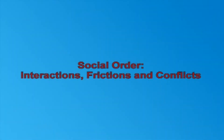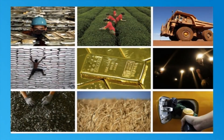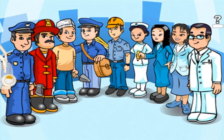The nature of these components of a society may vary from one society to another, and also within the same society from one time to another. However, these components exist in a society in some form or other. Social order refers to the interactions of these social components — for example, family to family interactions, caste and community interactions, interactions between rural and urban societies, interactions among economic divisions, interactions between different religions, etc. Social order also means how the various economic activities are carried on in a society, how marriages are conducted, how people are occupied in different jobs or professions, and how the political system of the society functions.